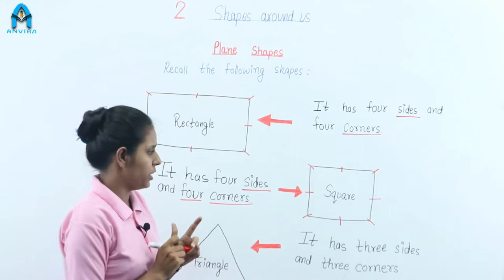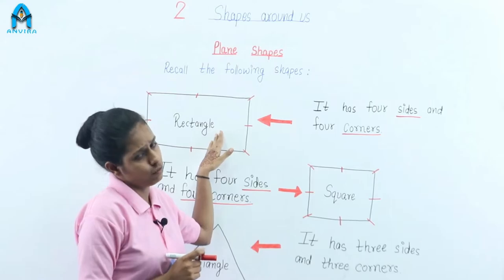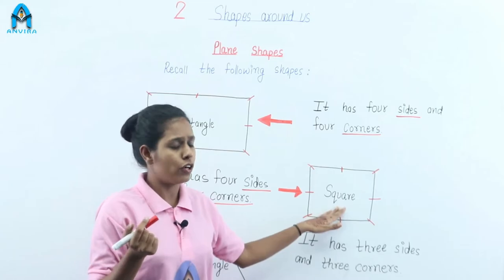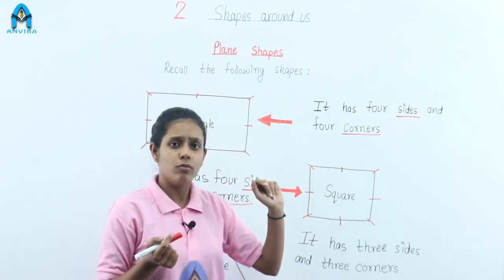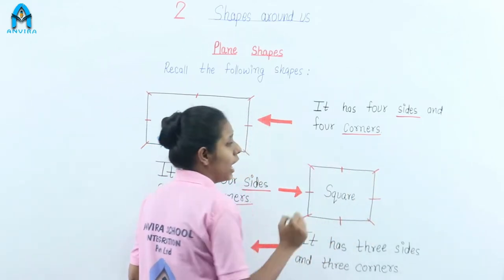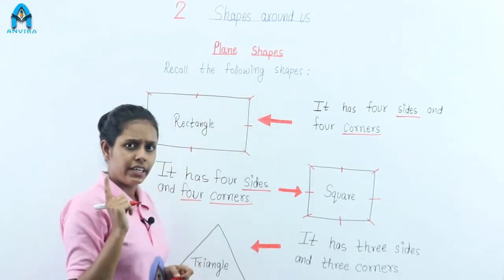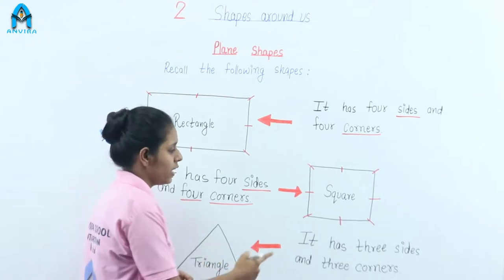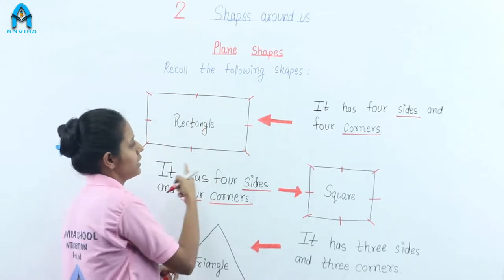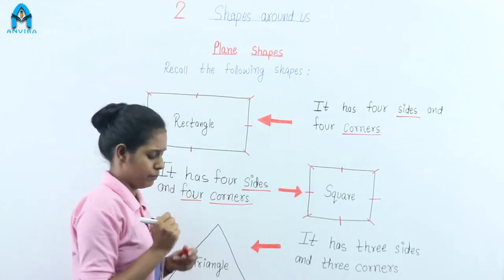Now we also have a square. A square also has four sides and four corners. What is different between these two shapes? In a square, all sides are equal. But in a rectangle, opposite sides are equal — not all sides are equal. In a square, all sides are equal. In a rectangle, only opposite sides are equal.